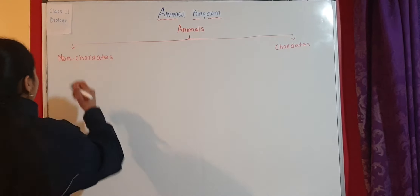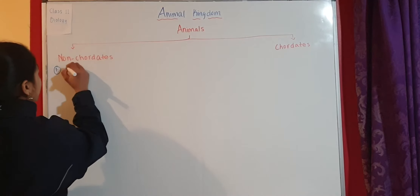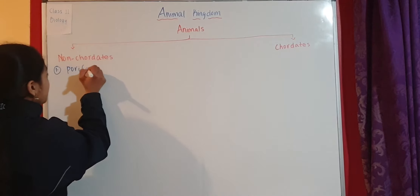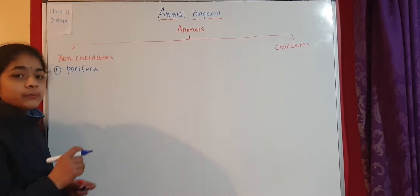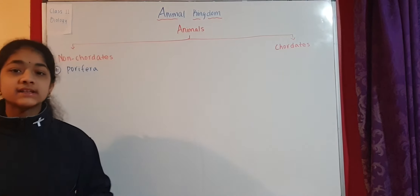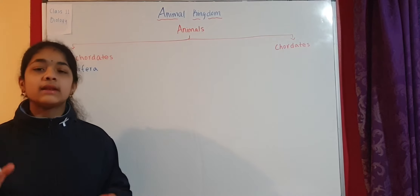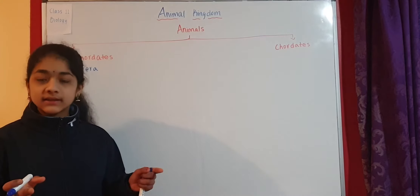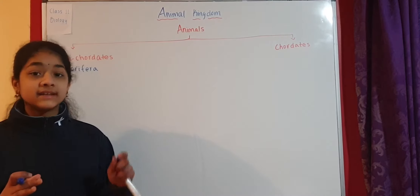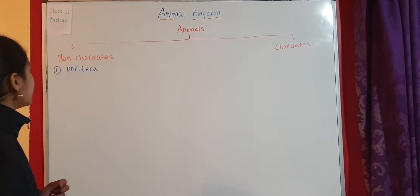The groups in Kingdom Animalia, or the Animal Kingdom, are called phyla. Each one is called a phylum and many are called phyla. In the Plant Kingdom, the groups are called divisions, whereas here in the Animal Kingdom they are called phyla.